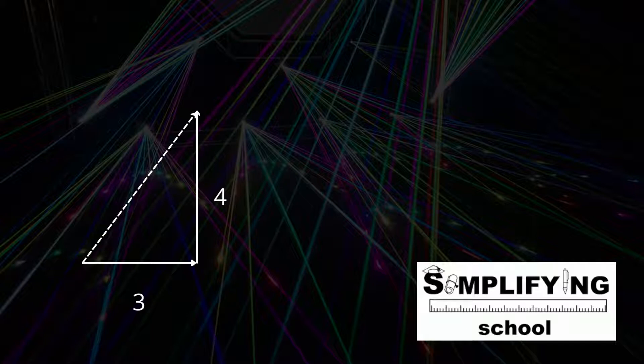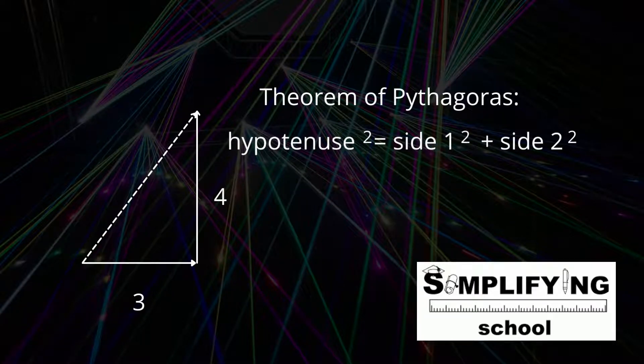As you can see, this forms a triangle, so we can use the Theorem of Pythagoras. The Theorem of Pythagoras says the first side squared plus the second side squared is equal to the hypotenuse squared.